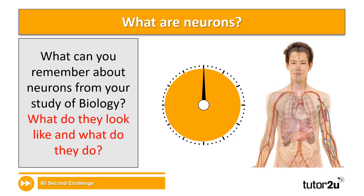There are two things that I would like you to do, and I'm going to give you a minute to do this. I want to know all that you already know in terms of what neurons look like — you might want to draw a diagram for that — and also what neurons do. This is going to be question one on your worksheet, and you're going to have until the timer finishes to complete this.